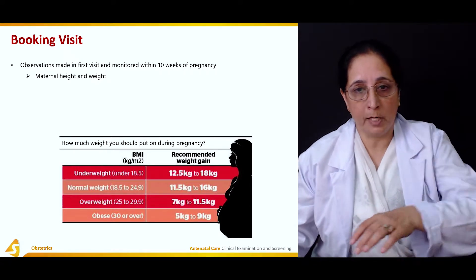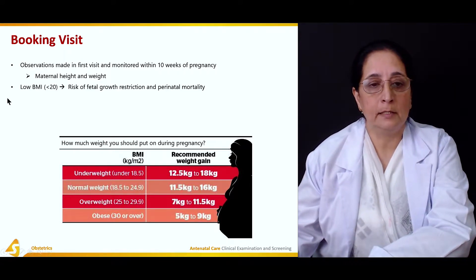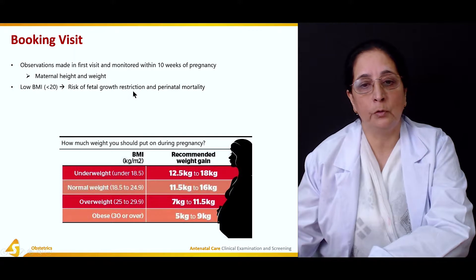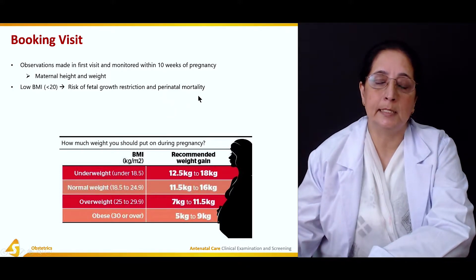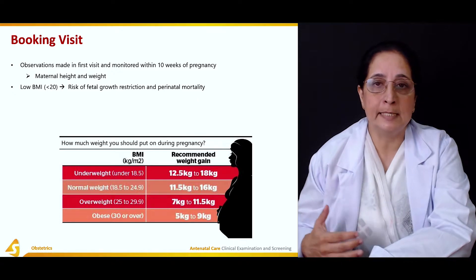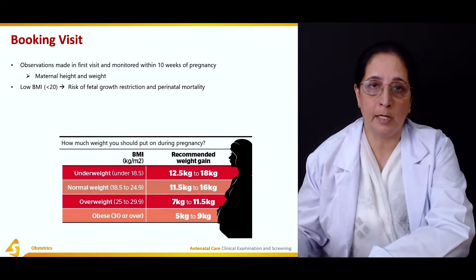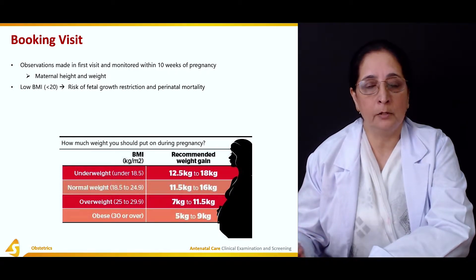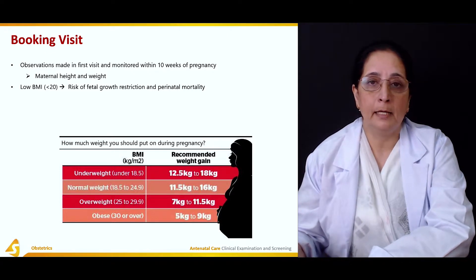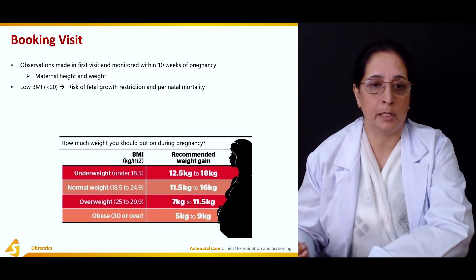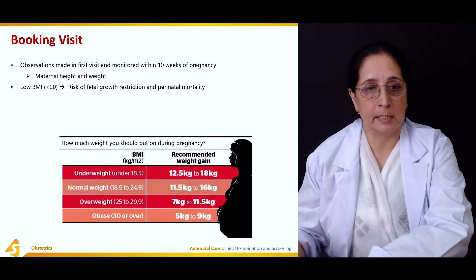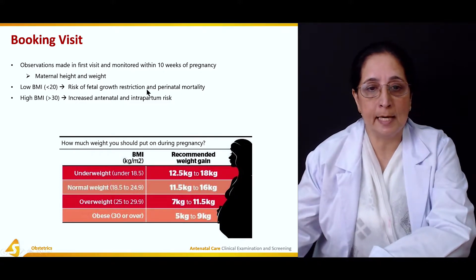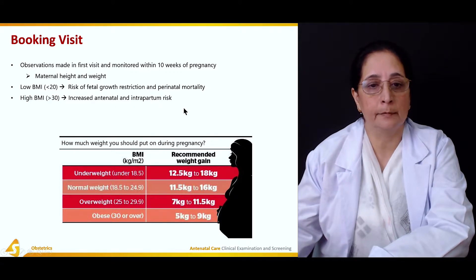Height and weight of the mother are important at each visit. A low body mass index less than 20 carries a risk of fetal growth retardation and perinatal mortality. If maternal weight is not increasing according to gestational period, it leads to intrauterine growth retardation. A high body mass index greater than 30 is associated with increased antenatal and intrapartum risk.